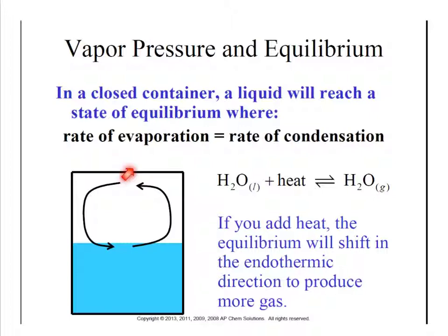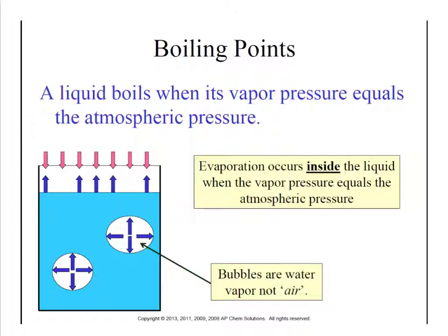That vapor pressure forming above the liquid also has to overcome atmospheric pressure. There's air all around us pushing down with 15 pounds per square inch, and liquids need to overcome that too. When they try to boil, they need to push up against that air so they can turn into gases and float away. A boiling point is the point where vapor pressure equals the atmospheric pressure. So if atmospheric pressure is about 15 pounds per square inch, the boiling point of water is the point when the vapor pressure of water also reaches 15 pounds per square inch.